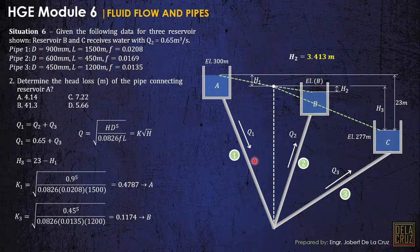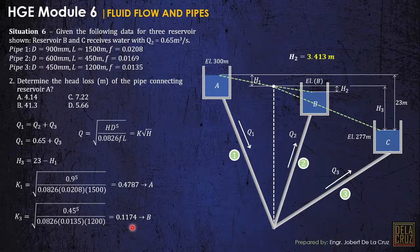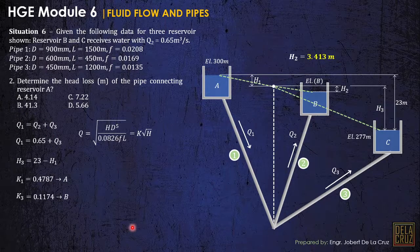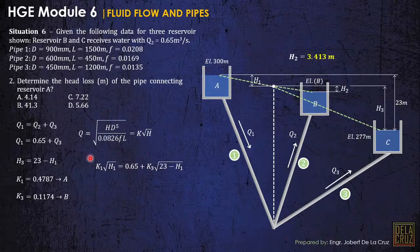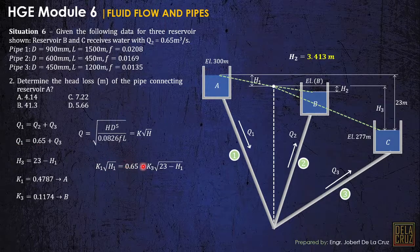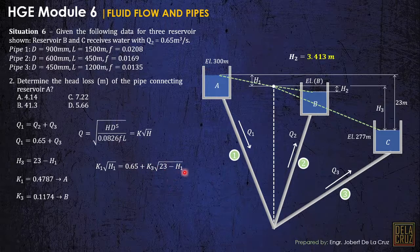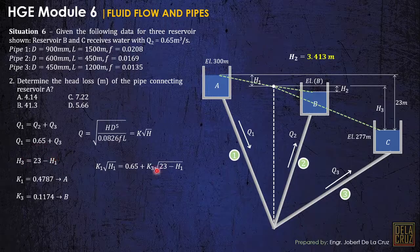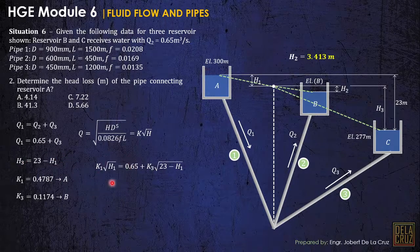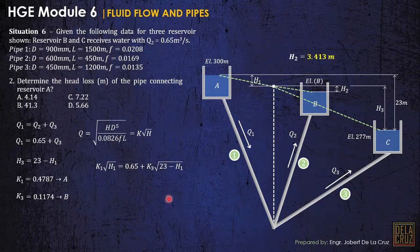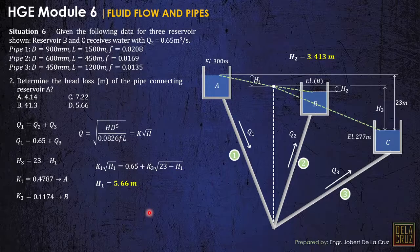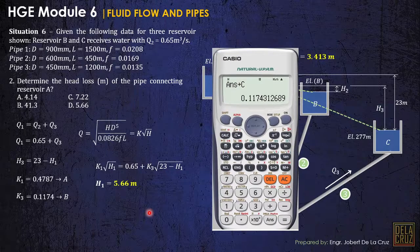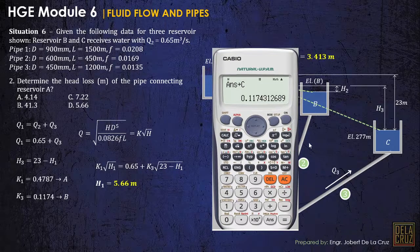And then we'll be supplying this constant to our equation. So using the main equation, we can say that Q1 is equivalent to K1 square root of H1, equals 0.65 plus K3 square root of 23 minus H1. So we express H3 to H1 so there's only one unknown. As you can see in the calculator, the only remaining unknown here is H1. Therefore, shift solve using our calculator approved by PRC, that is 5.66 meters.